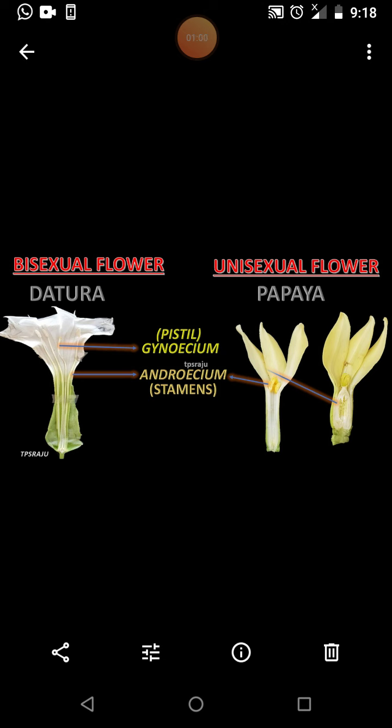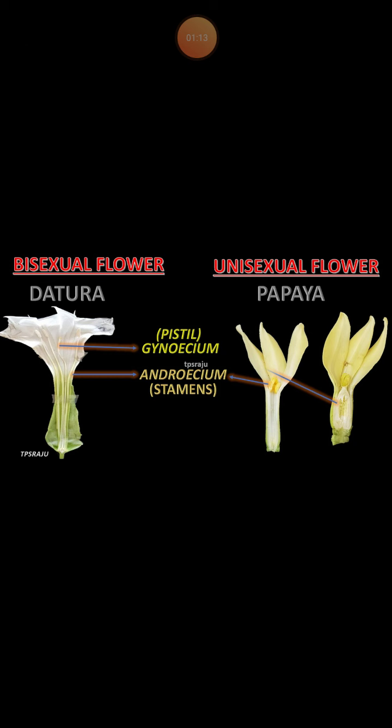The name of the male reproductive system is the androecium. The stigma, style, and ovary together are called the pistil. These are the parts of the gynoecium, which is the female reproductive system of the flower.